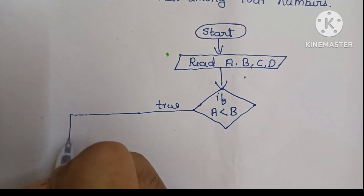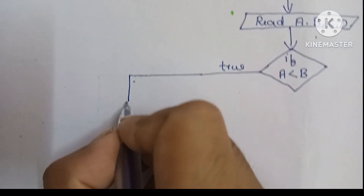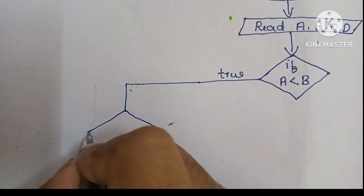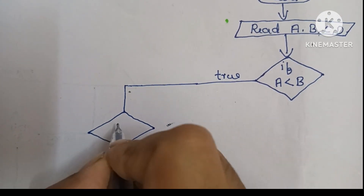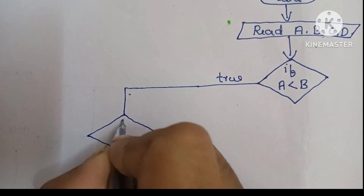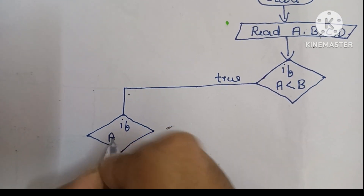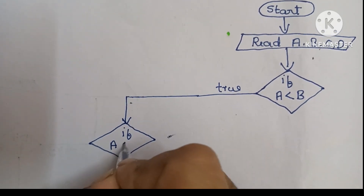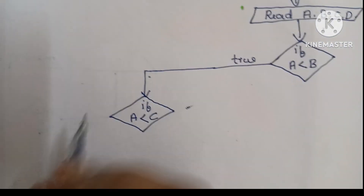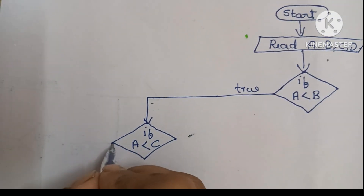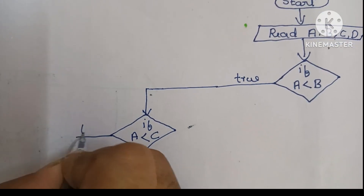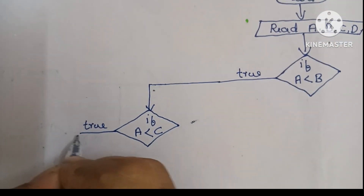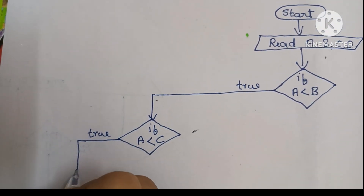The comparison is done within a diamond shape. We draw a diamond shape, and within that we compare A with C. If A is less than C and this condition is true, then A is still the smallest candidate. Next we continue.